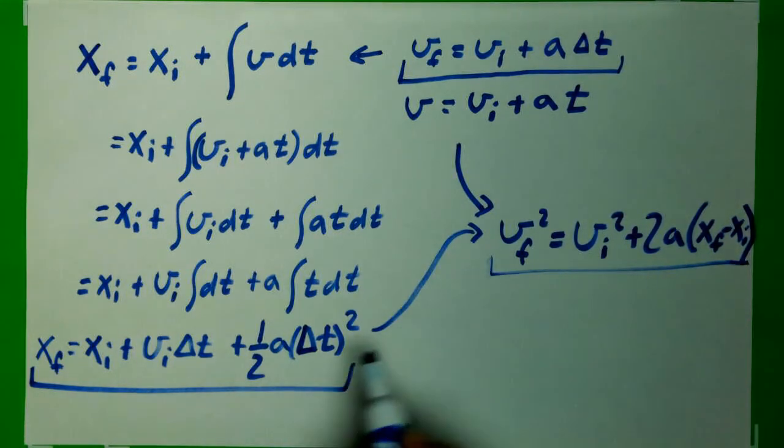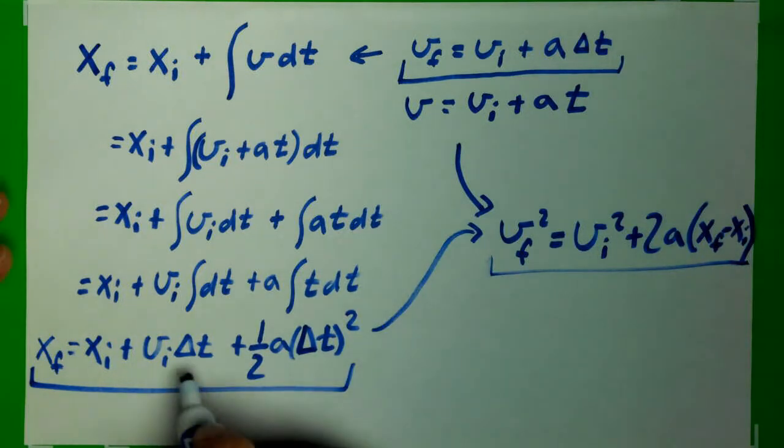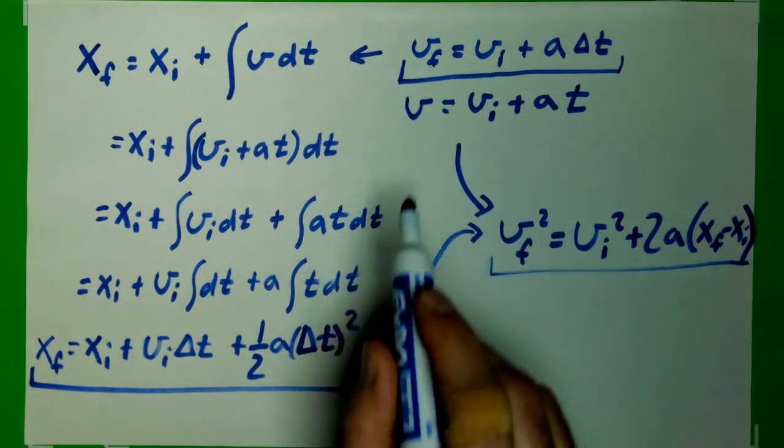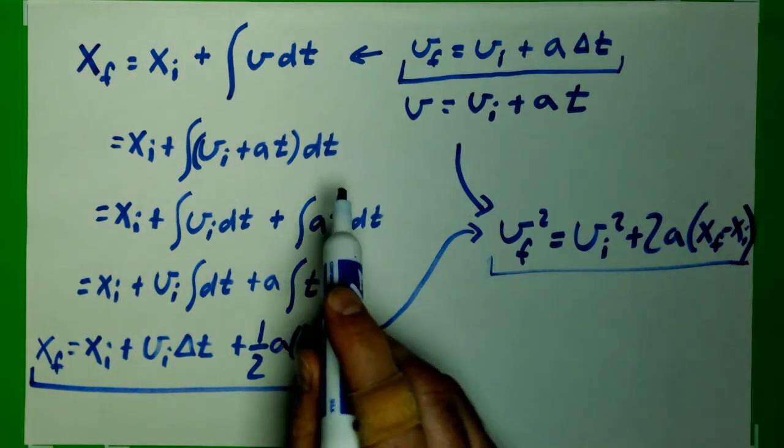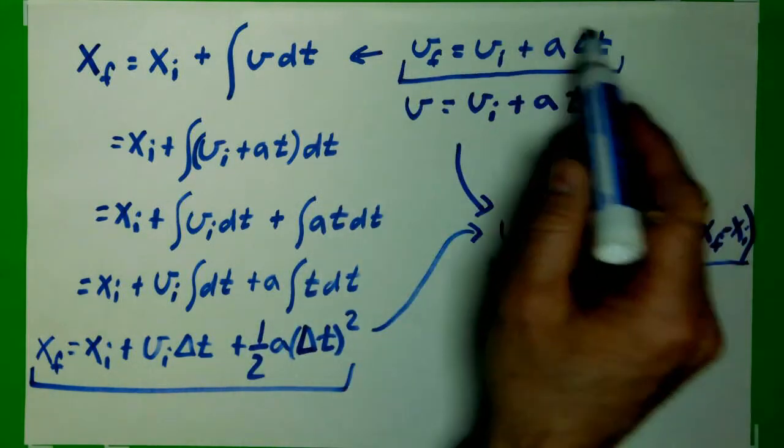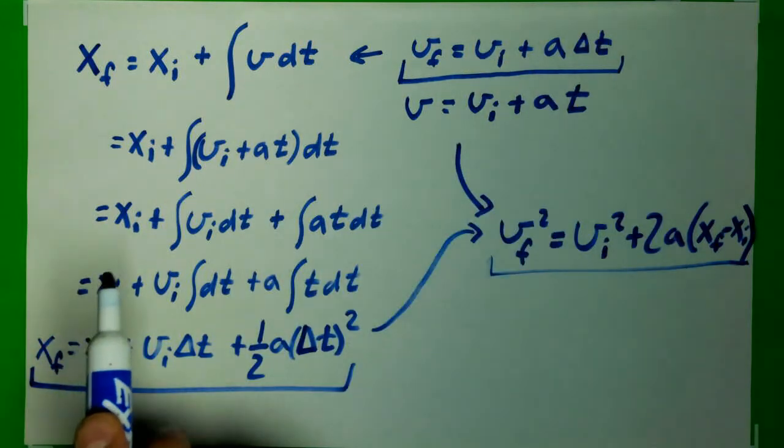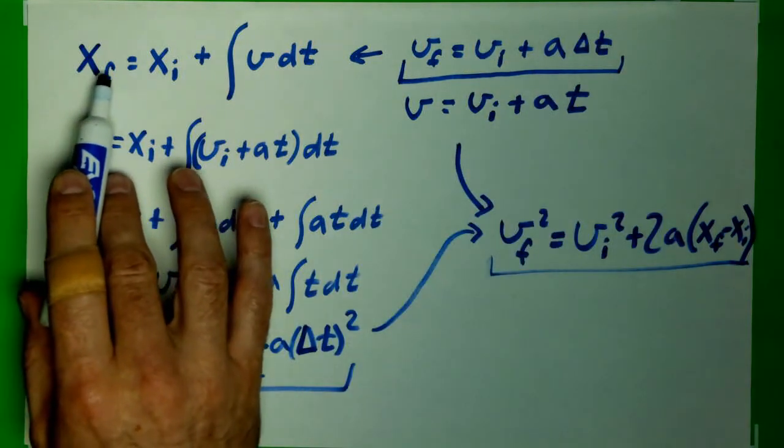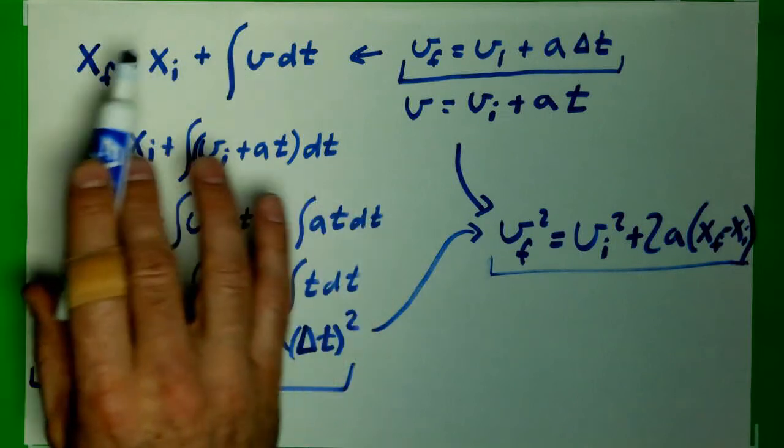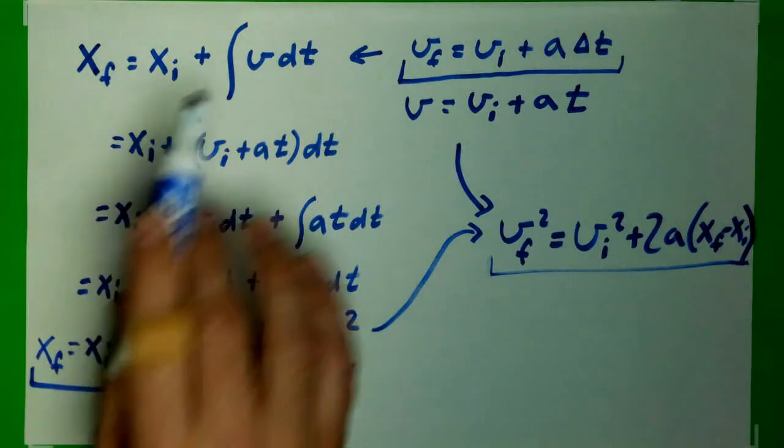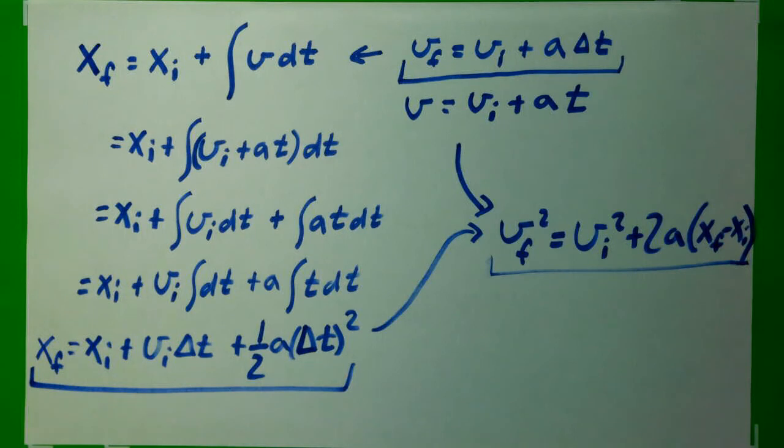Again, I like to emphasize, it's nothing new, it's just a mathematical manipulation. These two are based off of true physics principles. This one is the definition of acceleration. Acceleration is a change in velocity over a change in time. This one is defined as a change, it's a definition of velocity, change in position over a change in time. Only we have to be more careful when the velocity itself is changing, giving us this.